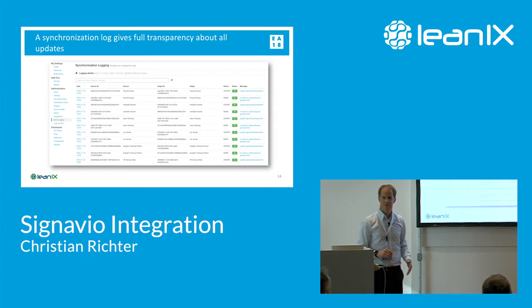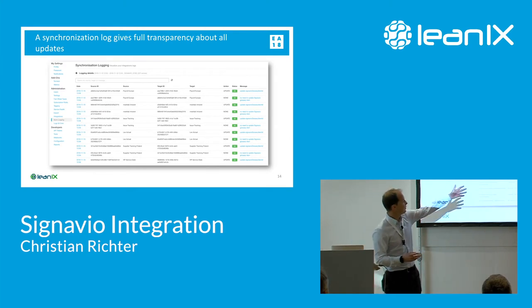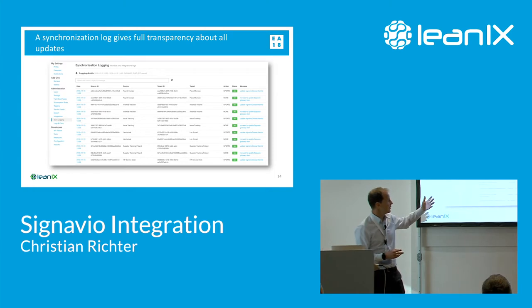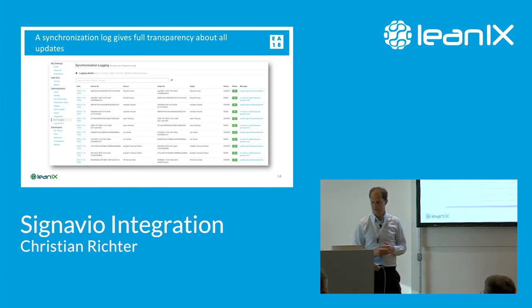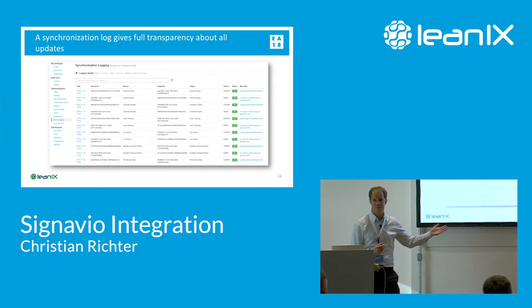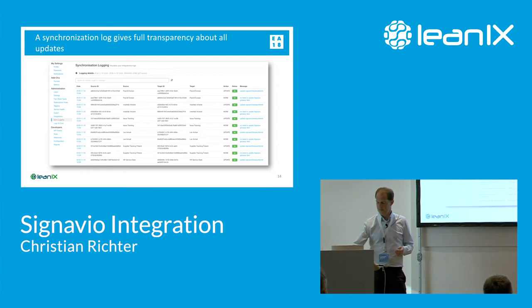Everything that happens through the integration is not a black box — it's documented in the sync log, available to check what happened: updates, things that were checked but had no changes. Everything is also tracked in the audit trail and the last-updates section. Name conflicts or any other conflicts are shown there as well, to ensure we have the right data.